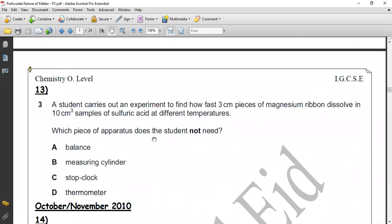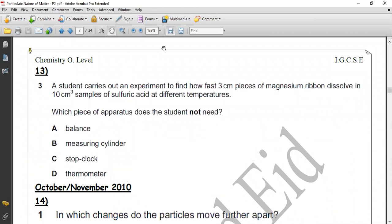Question 13. A student carries out experiment to find how fast - this means it has to use stopwatch, this is how fast - three centimeter piece of magnesium ribbon dissolves in 10 cubic centimeter of sample - cubic centimeter of sample will be measured by measuring cylinder - of sulfuric acid at different temperatures - we measure it at different temperature which is measured by thermometer. Which piece of apparatus does the student not need? As we can see, his parents...